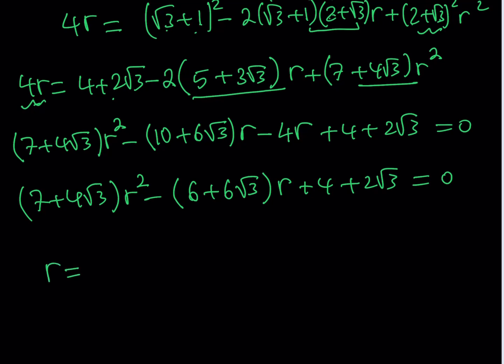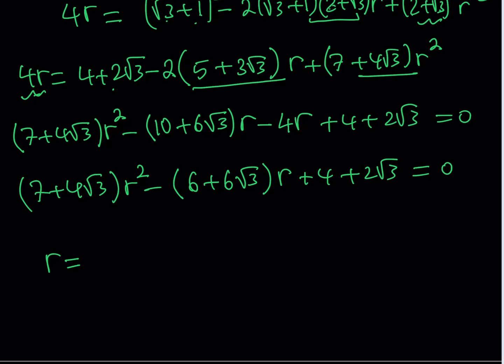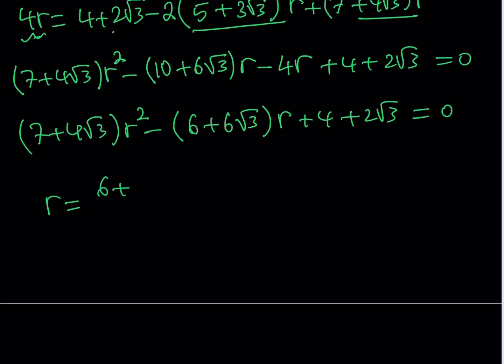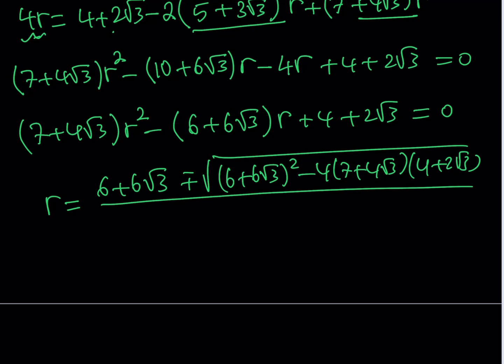Notice that there are two solutions, but only one of them is acceptable, and it depends on the size of the number, but let's go ahead and write both of them first, and then I'll tell you which one is going to be good. Negative b plus minus the square root of b squared minus 4ac. This is also kind of like a good review of quadratic formula. All over 2 times a, which is 14 plus 8 root 3. So once I simplify this expression, I'll get my answer.